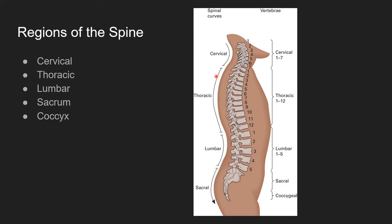The next set of vertebrae are the thoracic spine, also known as T1 through T12. These vertebrae have ribs that come off and fuse in the front to the sternum — they protect your thoracic cavity. The next portion is the lumbar region, L1 through L5. Chairs have lumbar support — it's a good way to remember this is your lower back. Finally, the sacral region is made up of two different bones: the sacrum and your tailbone, also known as your coccyx.